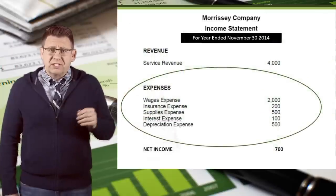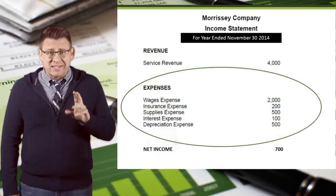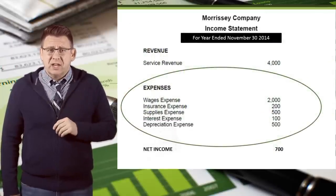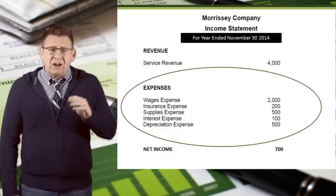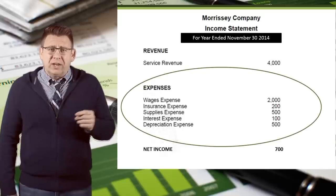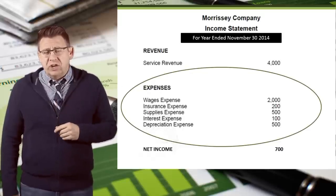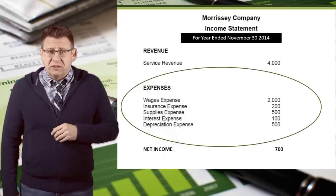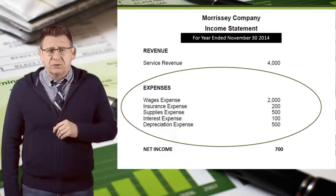Period costs are reported on the income statement as expenses in the period in which they were incurred. They are often known as operating expenses or selling, general and administrative expenses, or SG&A for short.